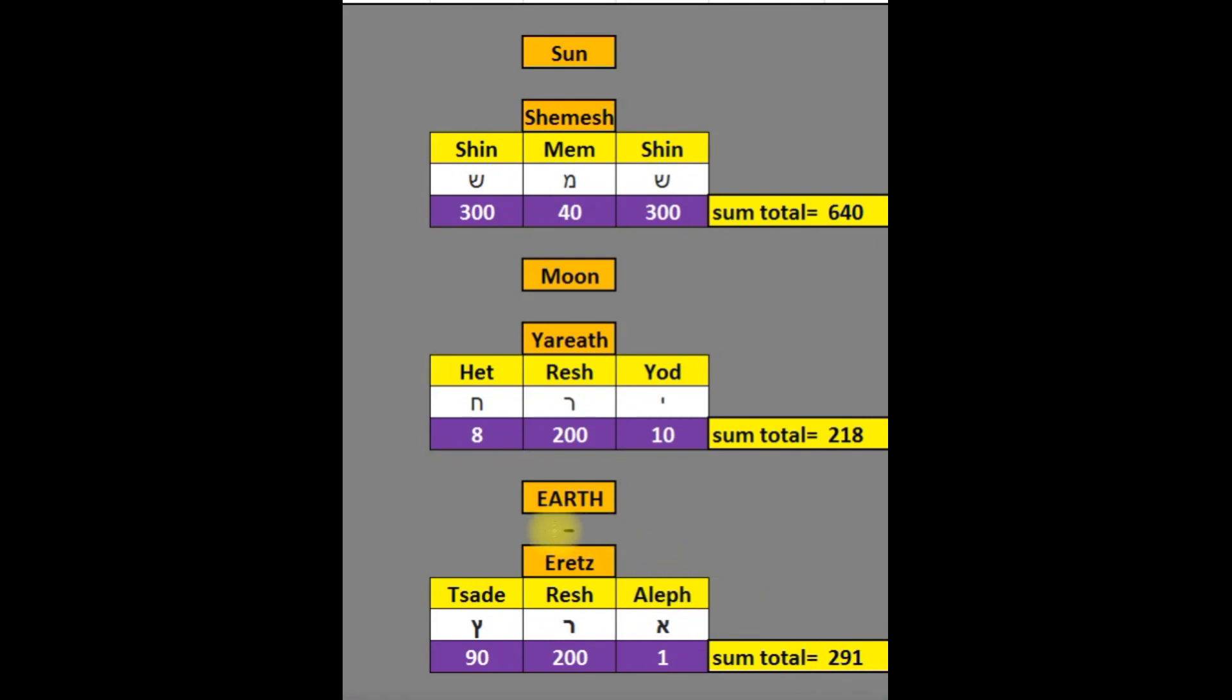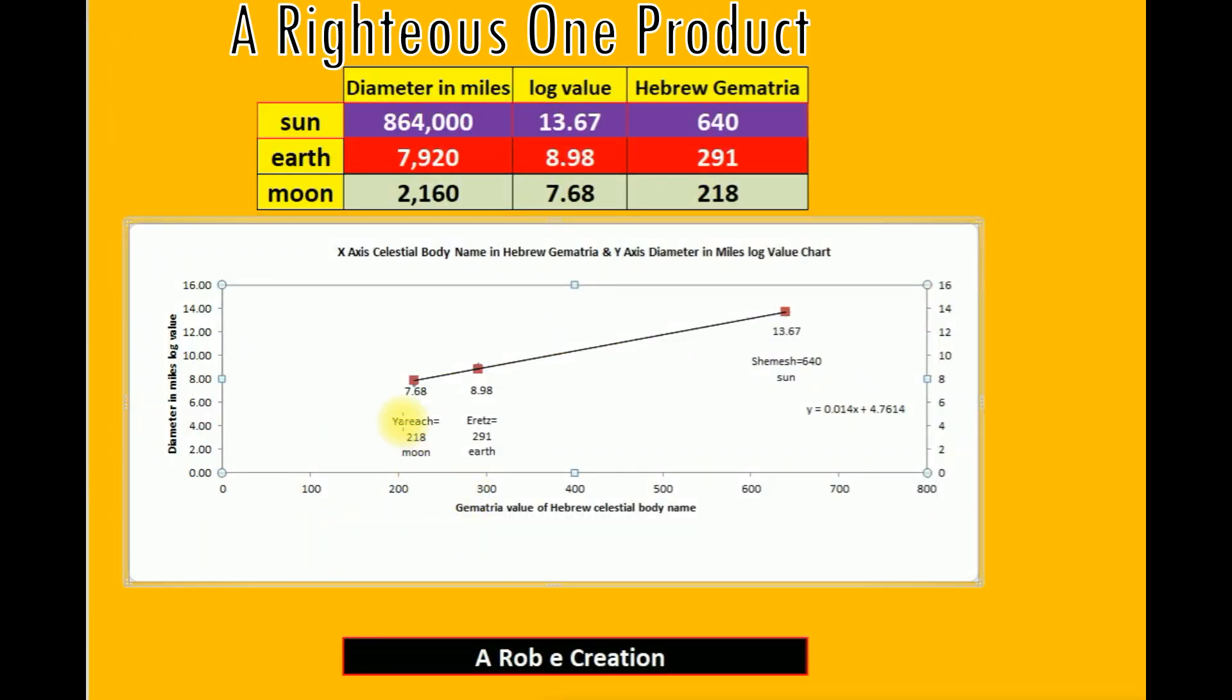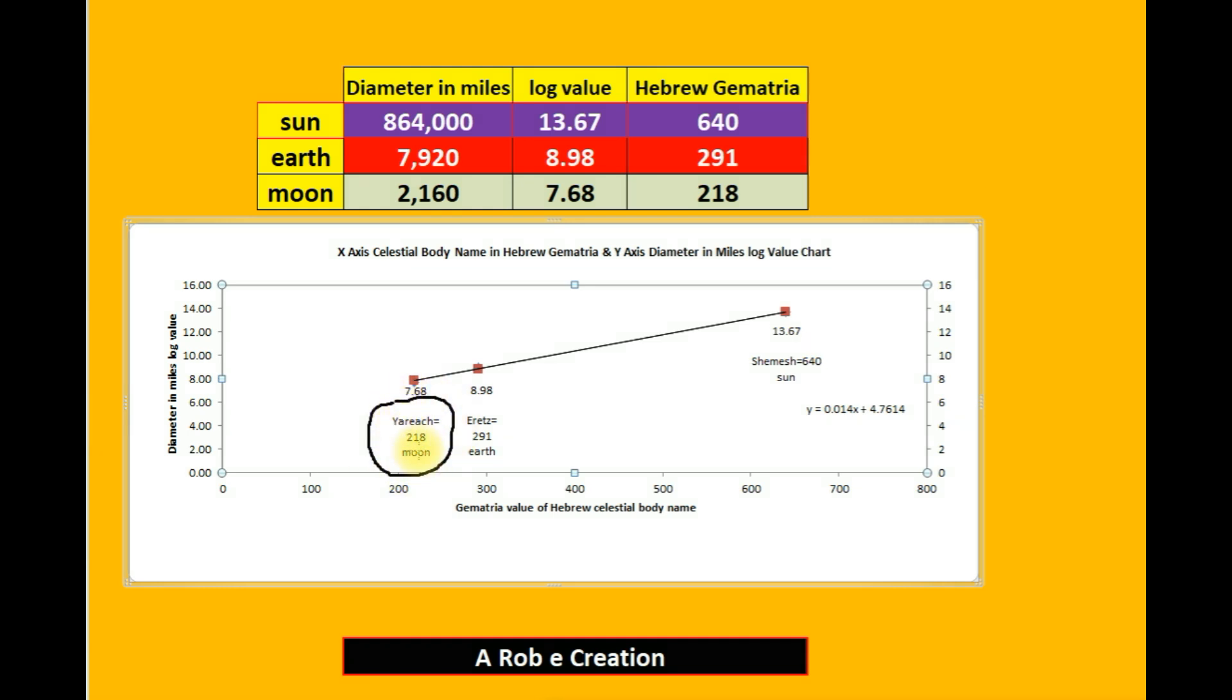Using the Hebrew names for the earth, Eretz, having a Hebrew gematria sum total of 291; Yarech, the moon, having a value of 218; and Shemesh, the sun in Hebrew, having a value of 640. Moon in Hebrew, Yarech, has a Hebrew letter value sum total of 218.